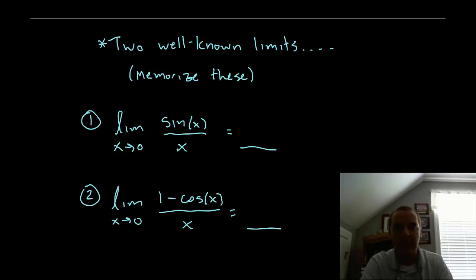The limit of sine x over x as x approaches zero. You notice if you just try to plug in zero, sine of zero is zero divided by zero, you get an indeterminate form, so you keep looking.